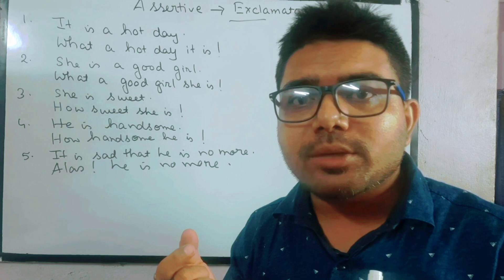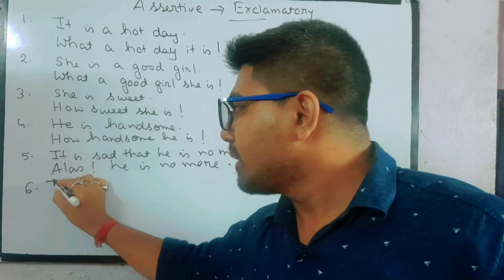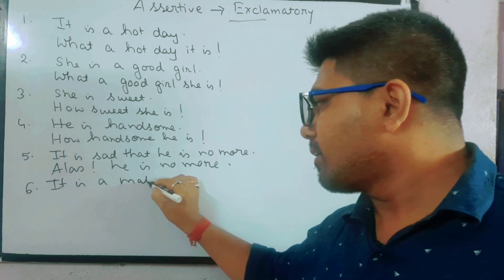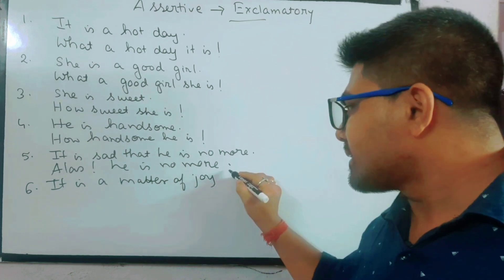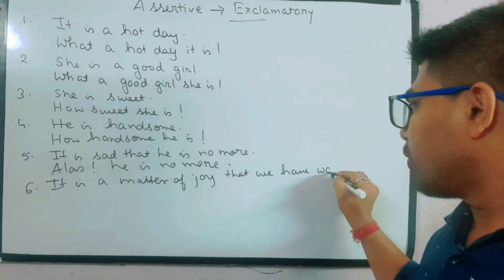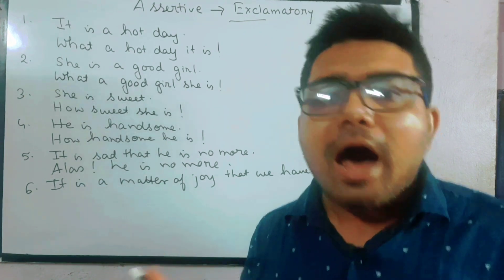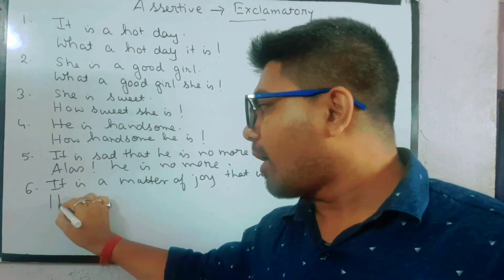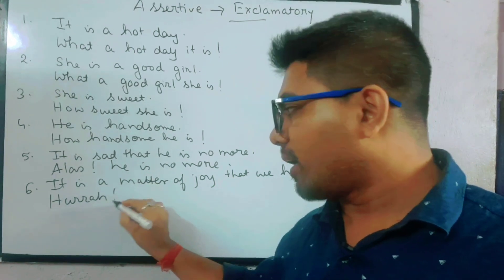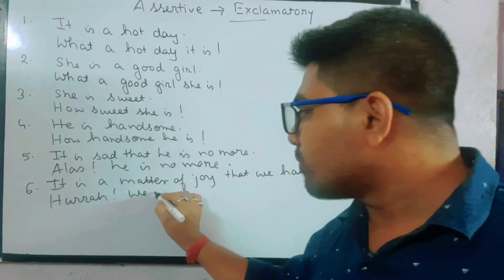Now if it is a matter of joy or happiness — for example: 'It is a matter of joy that we have won.' Khushi ka baat hai, hum log jeet gaye hain. To khushi ke maare we use 'Hurrah': 'Hurrah! We have won!' So for happiness, the exclamatory word we use is 'Hurrah.'